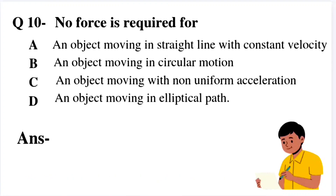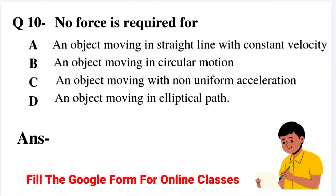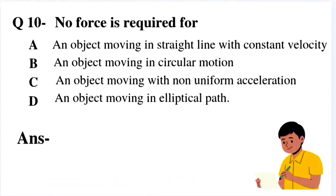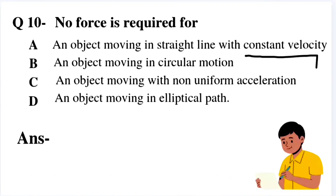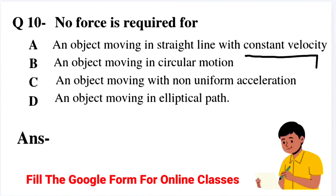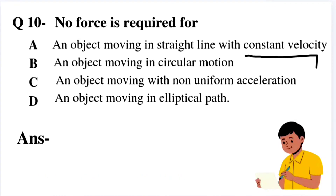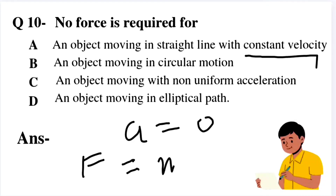An object moving in a straight line with constant velocity has no change in velocity, so acceleration is zero. By Newton's second law, F equals MA, and if A is zero then force is zero. So no force is required in that case. Option A is the right answer.